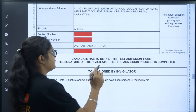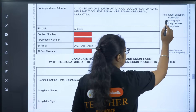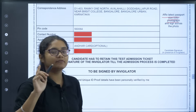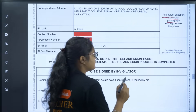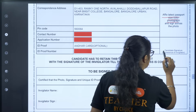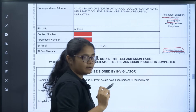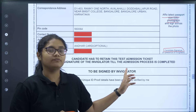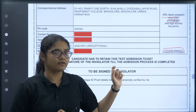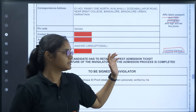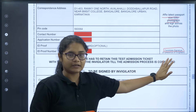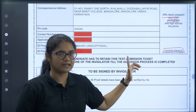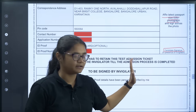After this, you have to paste your colored photograph here and sign it. Another important point: a candidate signature is required, but this signature you do not have to do from home. You have to sign it in the exam center in front of the invigilator. Do not sign it at home — you have to sign it in the exam center. Remember this.